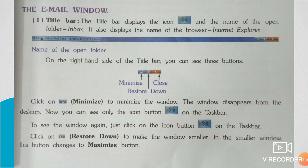If you want to see the window on the taskbar, click on Restore Down to make the window smaller. In the smaller window, this button changes to the Maximize button. The Restore Down button changes the window size.